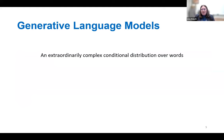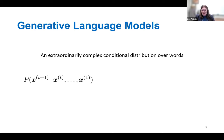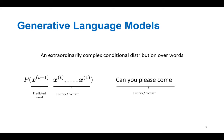Generative language models are, on the one hand, very simple to understand because they're just a conditional probability distribution over words. But they're a very, very complex conditional probability distribution because of the huge size of these models. That probability distribution looks something like this: it's the probability of any given token, where a token is a word, or sometimes punctuation, or parts of words, or other features of text like when to stop or a paragraph break.